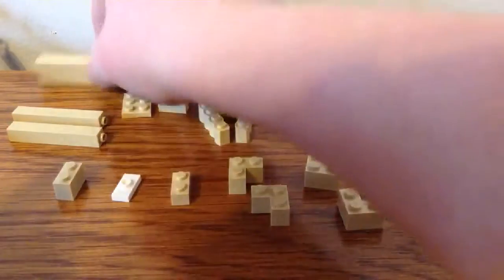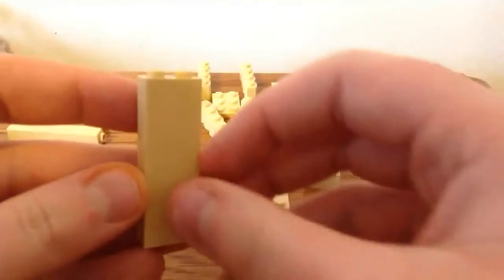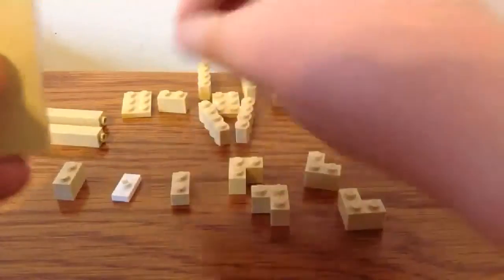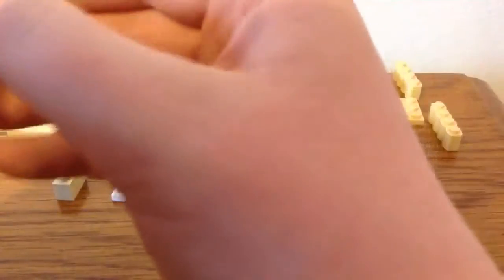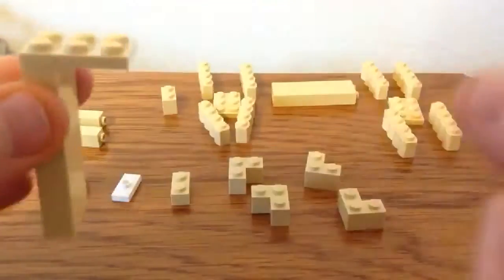So, first you'll need to get the 1x2 tan block, which is five of these high, I believe. I'm pretty sure it's five of these regular blocks high. And then you'll put that on the end of a 2x3 tan plate. And then you'll do that again on the other end of the tan plate.